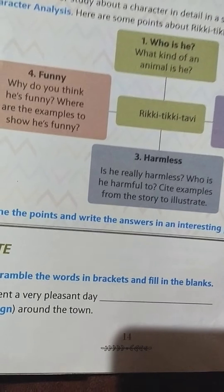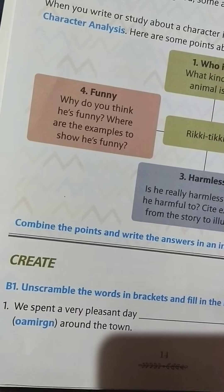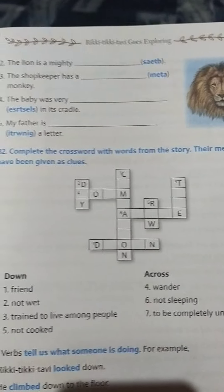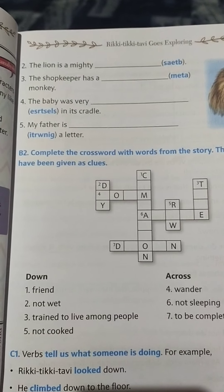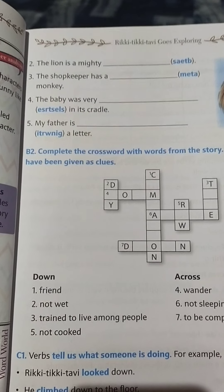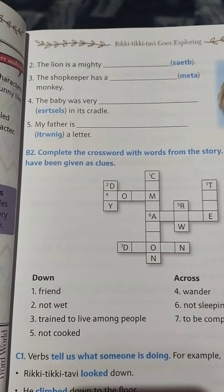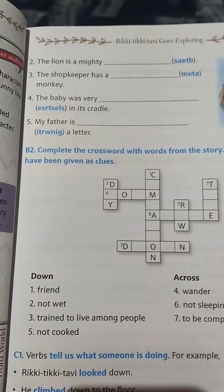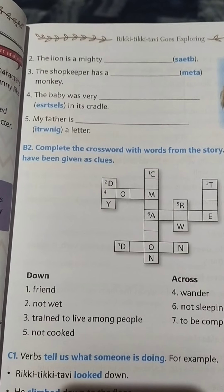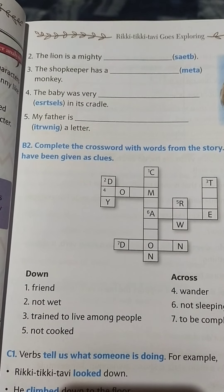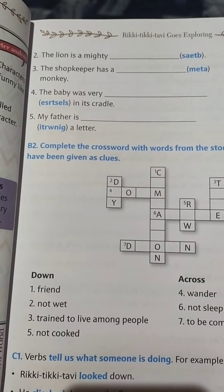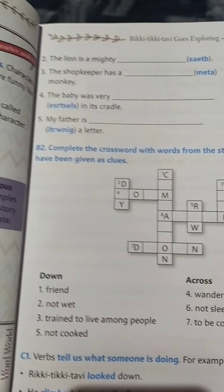Roaming means wandering. R-O-A-M-I-N-G. The lion is a mighty beast — B-E-A-S-T — beast means janwar. The shopkeeper has a tame monkey — tame means paldu. The baby was very restless in its cradle — R-E-S-T-L-E-S-S. My father is writing a letter — the scrambled word unscrambles to 'writing', W-R-I-T-I-N-G.